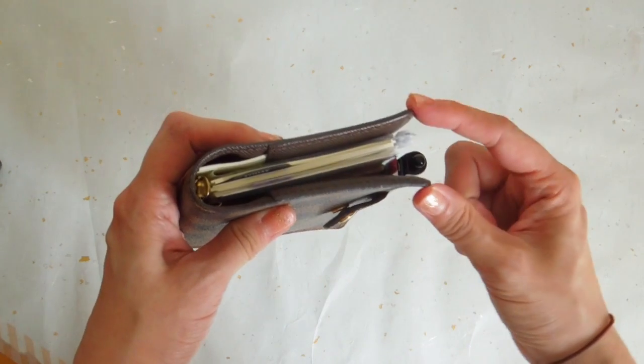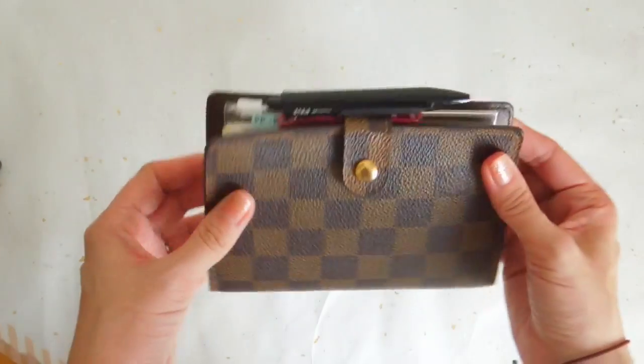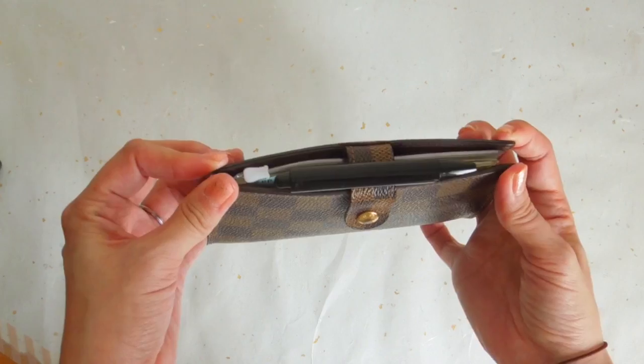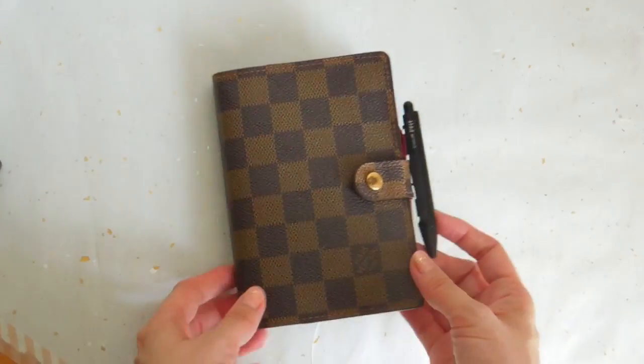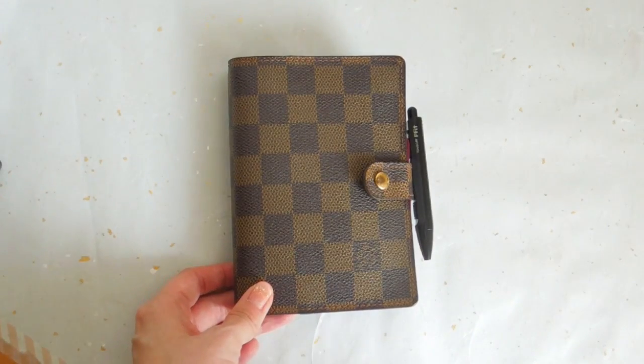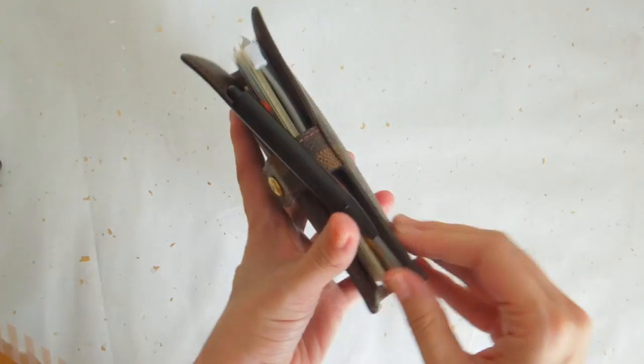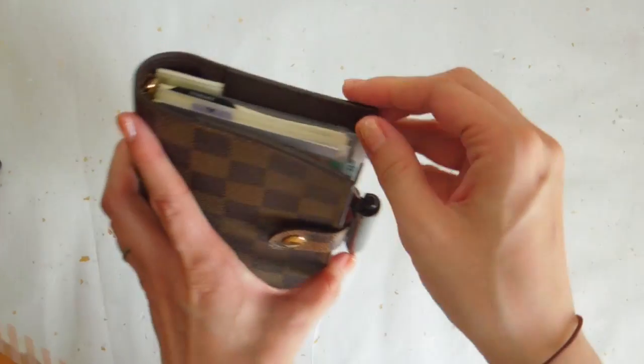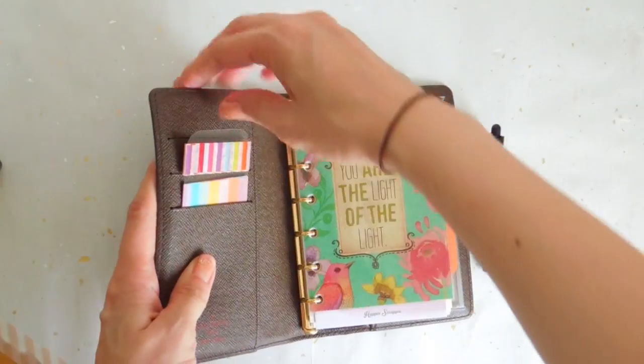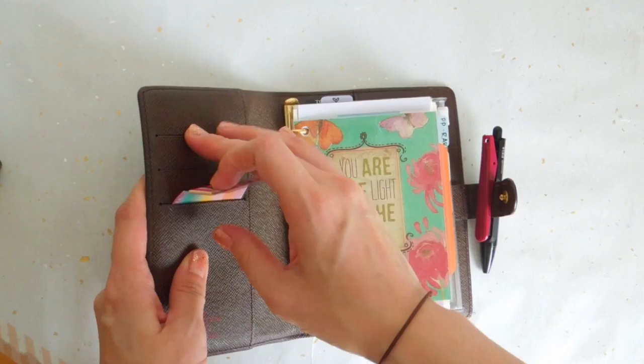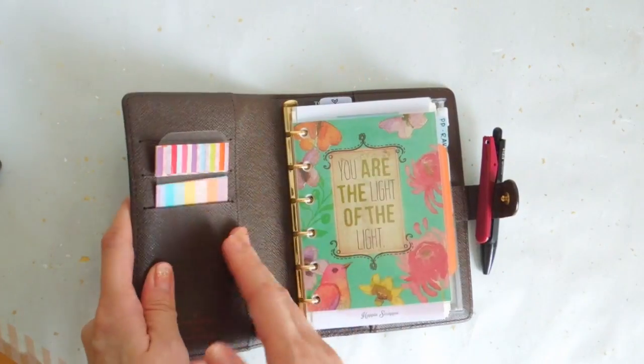I was bothered by these curling edges, and I still get bothered by it, but to be honest, it is what it is. Somebody recommended to keep using it and it will eventually kind of straighten itself out. Maybe if I put something harder in these pockets here, like a harder plastic, it might help as well.